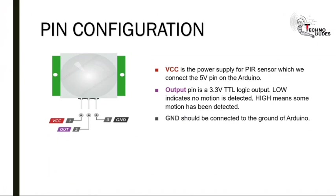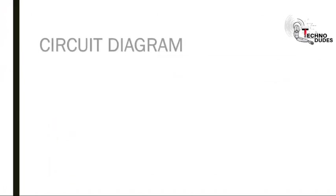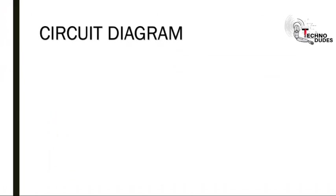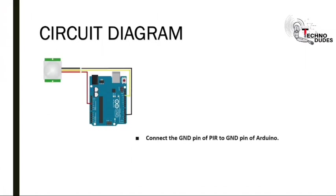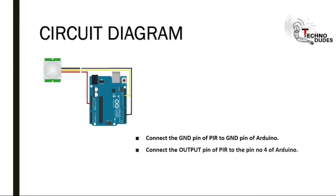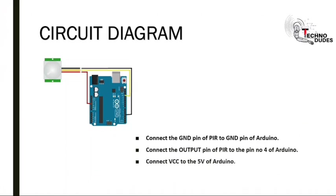Ground should be connected to the ground of the Arduino. For the circuit diagram: first, connect the ground pin of the PIR to the ground pin of the Arduino; then connect the output pin of the PIR to pin number 4 of the Arduino; and finally connect VCC to the 5V of the Arduino.